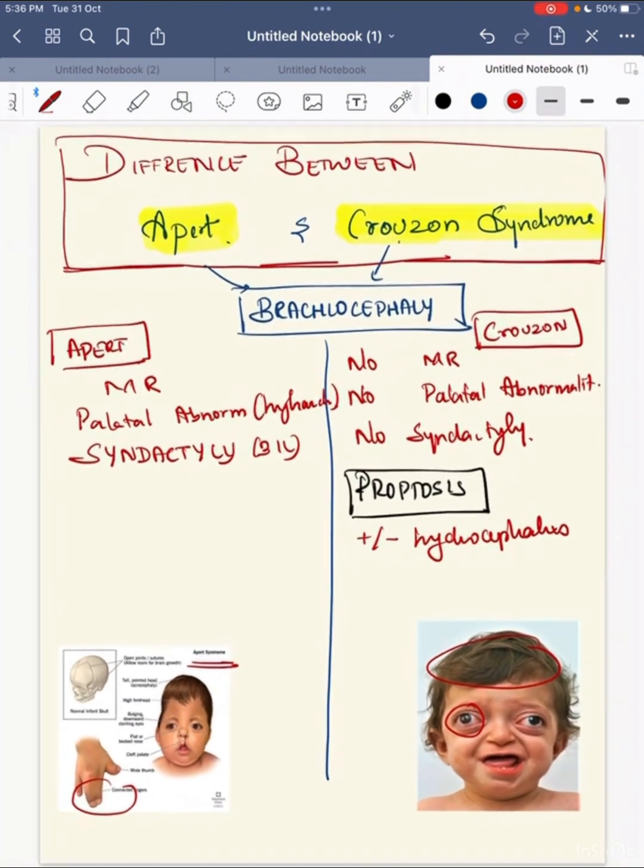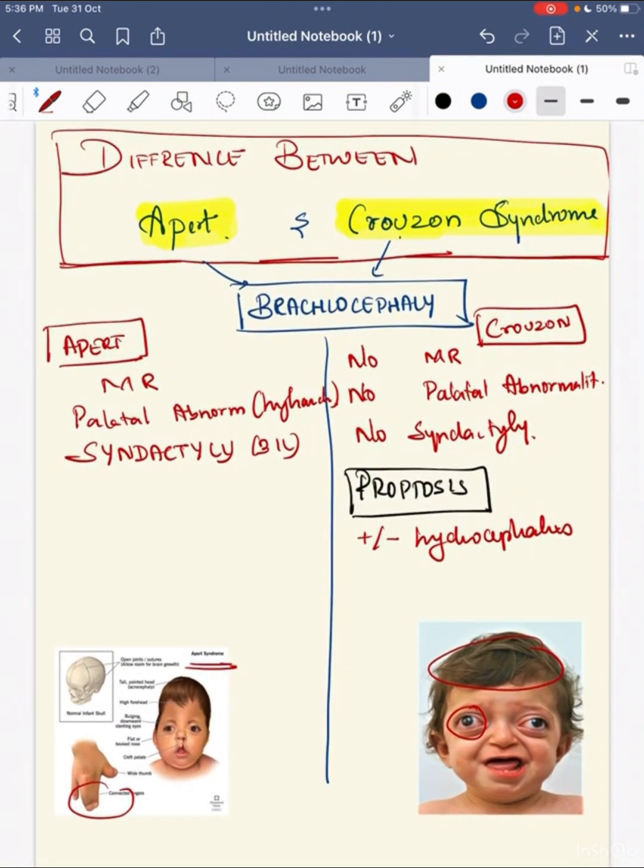That is, these connected fingers are called as syndactyly or called as mitten hand. Next, the child can present with or without proptosis and they are prone for hydrocephalus.